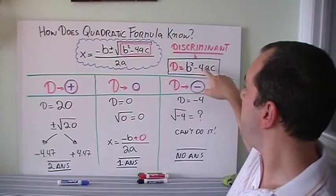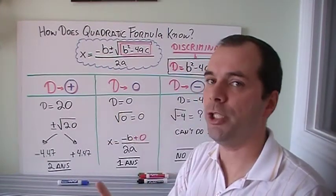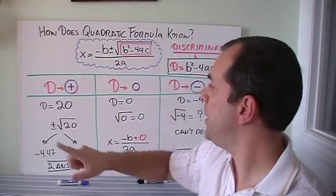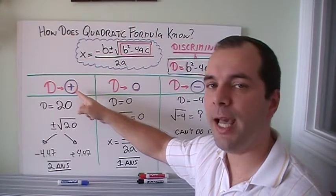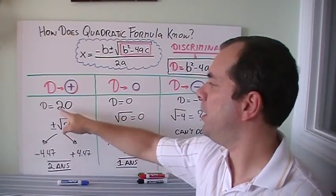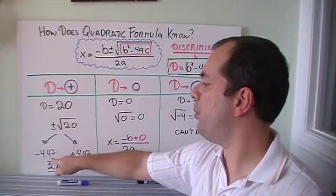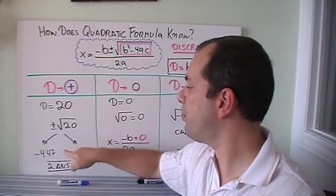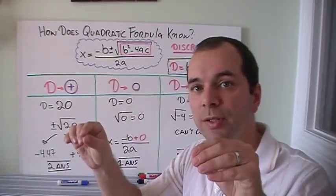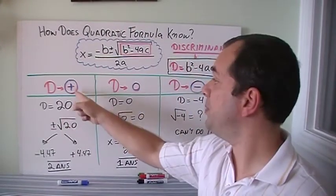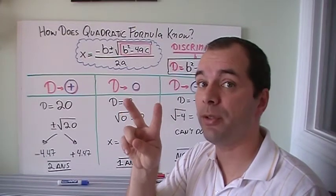So the discriminant is b squared minus 4ac. If the discriminant ends up being positive, let's say it's 20 for example, and I do the square root of 20, well that's 4.47 and so on. So I'm gonna have to add 4.47 and I have to subtract 4.47, two different answers, and that's gonna give me the two answers. So when this is positive, I'm gonna have two possible answers, two right answers, two zeros, two real roots.